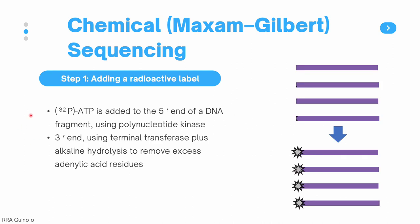The first step in chemical sequencing is the addition of a radioactive label. The label being used is radioactive phosphorus, and usually this is conjugated to ATP. This is added to the five prime end of a DNA fragment using polynucleotide kinase enzyme. If you want to add this radioactive phosphorus to the three prime end, the usual method is using terminal transferase plus alkaline hydrolysis to remove excess adenylic acid residues. The radioactive label is very important in order to visualize the DNA fragments later on.